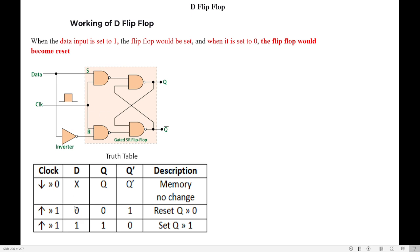Whatever be the value of D: if D is 0, output Q is 0; if D is 1, output Q is 1. This will happen only when the clock is high. If the clock is high, whatever input you give, that input will come as the output. If the clock is low, irrespective of the input D, the output will not change — so it acts like a memory.